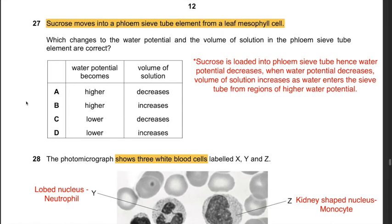Question 27: Sucrose moves into a phloem sieve tube element from a leaf mesophyll cell. Which changes to water potential and volume of solution in the phloem sieve tube element are correct? When sucrose is loaded, the water potential in the phloem sieve tube element decreases. This leaves answer C or D. When water potential decreases, water enters from regions of higher water potential, so the volume of solution increases. Therefore the answer is D: water potential becomes lower, volume of solution increases.